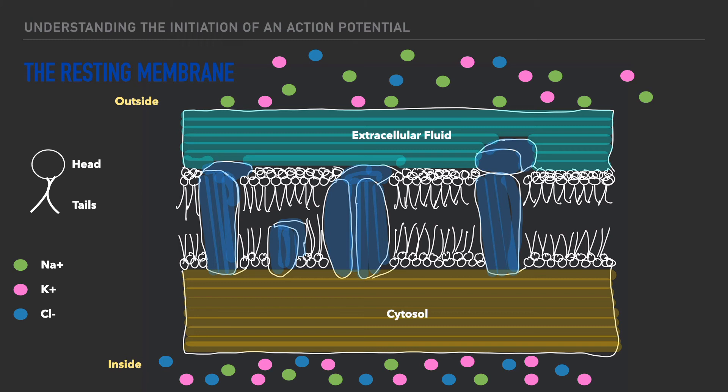And lastly, if we were to measure the outside of the cell with a voltmeter, we'd likely get a value of zero millivolts. Whereas if we were to measure the inside of the cell with a voltmeter, we'd likely get a reading of negative 70 millivolts. And it's this value in particular that we generally associate with the resting membrane potential of a neuron.